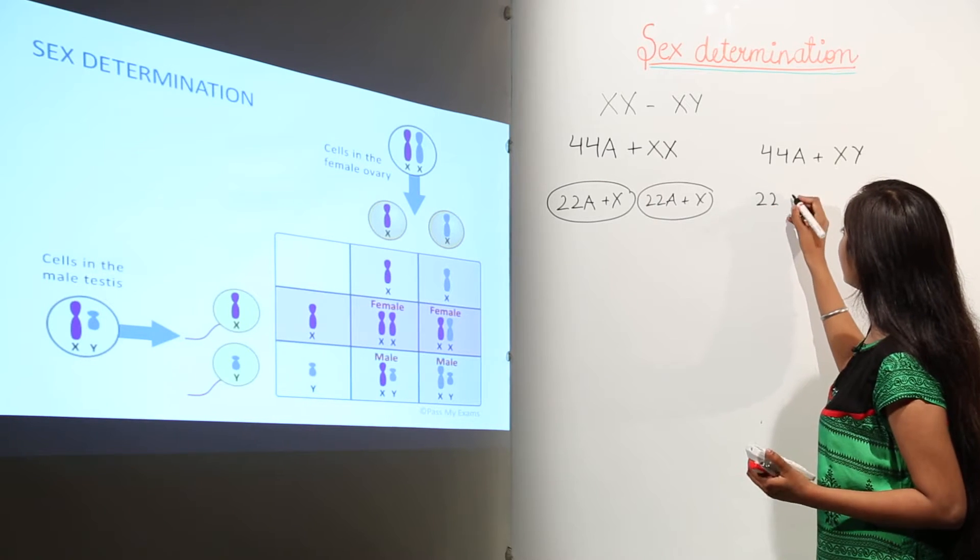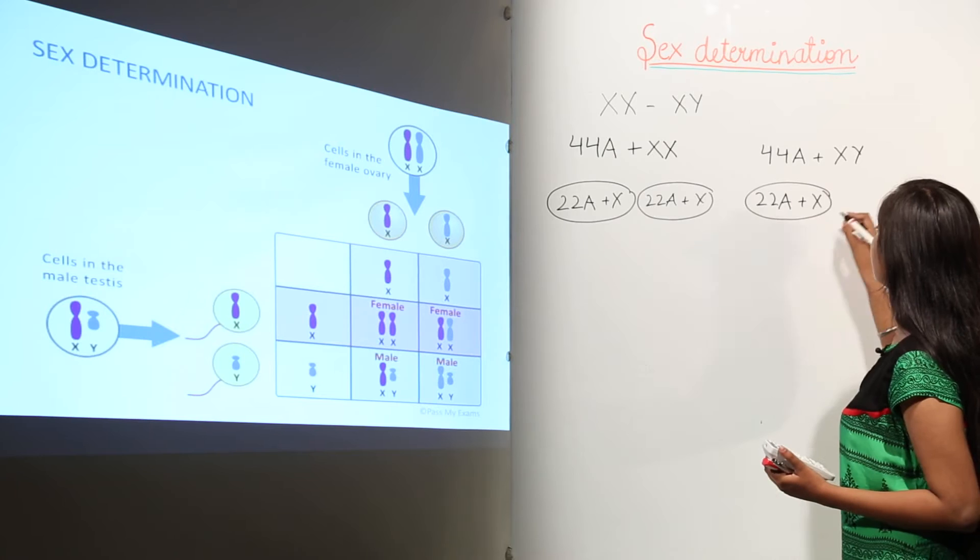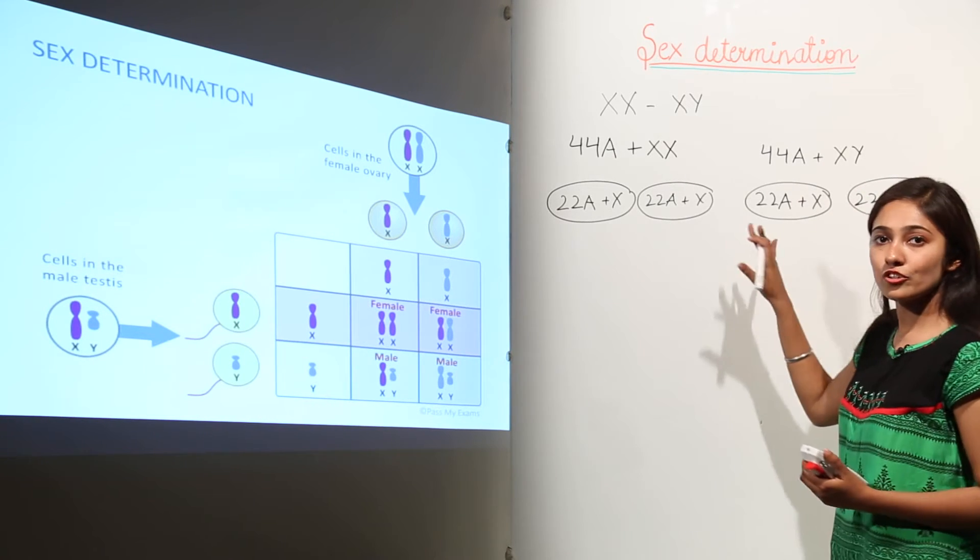Then in case of males, we can have a combination like an X and a Y. That is why they are heterogametes.